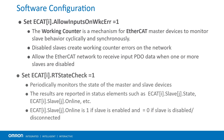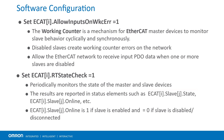Second, set ECAT[0].RTStateCheck to 1. This parameter periodically monitors the state of the master and slave devices on the network. The results are reported in status elements such as ECAT[i].slave[j].state and ECAT[i].slave[j].online.